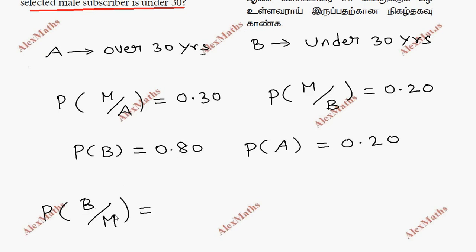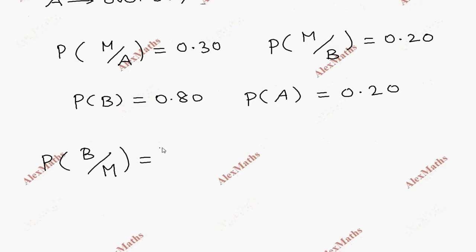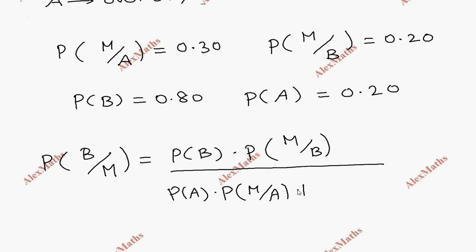This is the Bayes formula. The probability of B given M equals P of B times P of M given B, whole divided by P of A times P of M given A plus P of B times P of M given B.